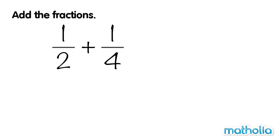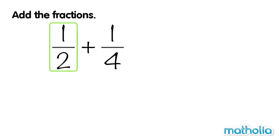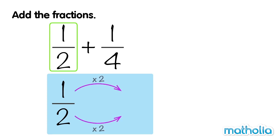Let's find 1 half plus 1 quarter. The denominators of these fractions are not the same. To add the fractions, we must first make the denominators the same. If we multiply the numerator and the denominator of a half by 2, we get 2 quarters.